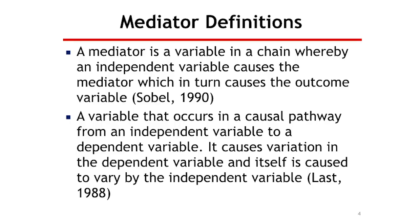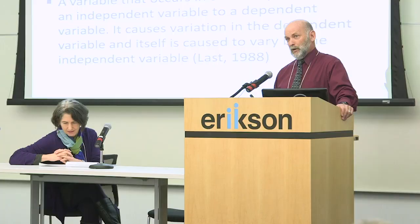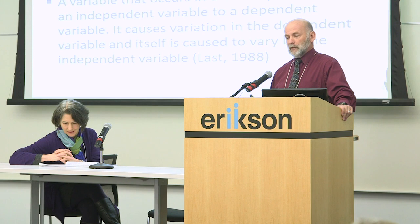A mediator is a variable in a chain whereby an independent variable causes the mediator, which in turn causes the outcome. My favorite definition: a variable that occurs in a causal pathway from an independent variable to a dependent variable — it causes variation in the dependent variable and itself is caused to vary by the independent variable. So a mediator does two things: it's caused by your manipulation, the independent variable, and it also causes the outcome variable.